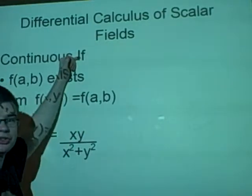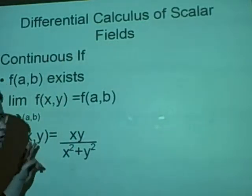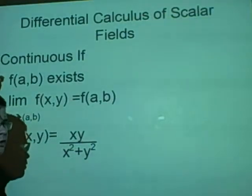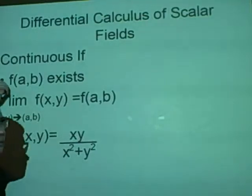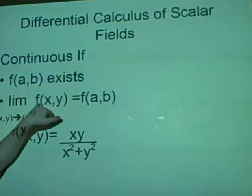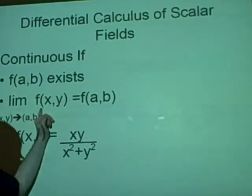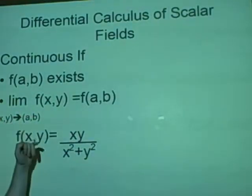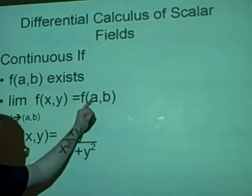And a scalar field is continuous if it satisfies both of these. So f(a,b) must exist, where a and b are any integer. And the limit of f(x,y) as (x,y) goes to (a,b) equals f(a,b).